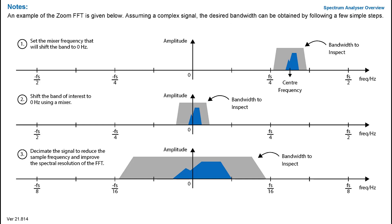An example of the Zoom FFT is now shown. Assuming that a complex signal is used, the Zoom FFT can be applied in three simple stages. At stage 1, the mixer frequency is selected that will shift the band of interest to 0 Hz. As shown, this mixer frequency is labeled as the center frequency. At stage 2, the band of interest has been shifted to 0 Hz using a mixer. At stage 3, decimation is applied to the signal to reduce the overall sample frequency and improve the spectral resolution of the FFT.